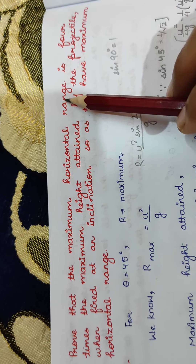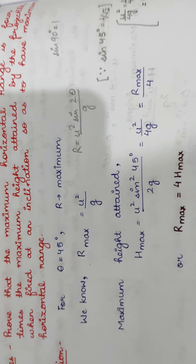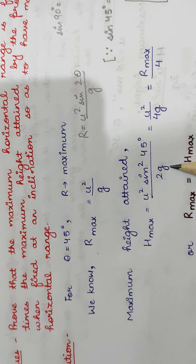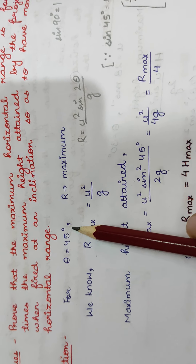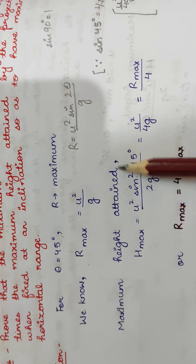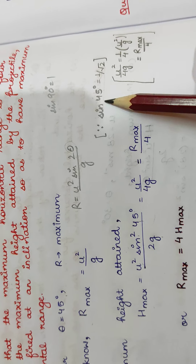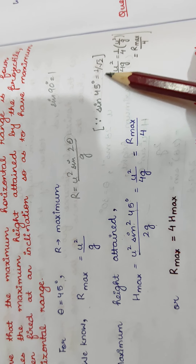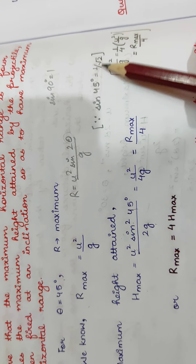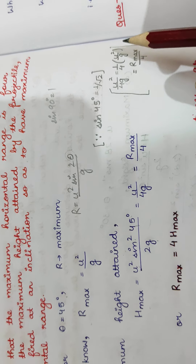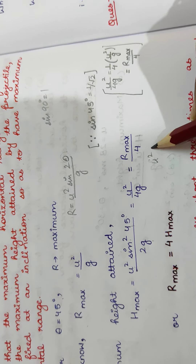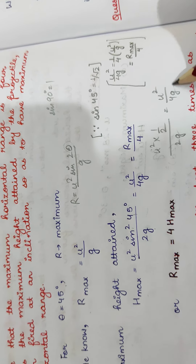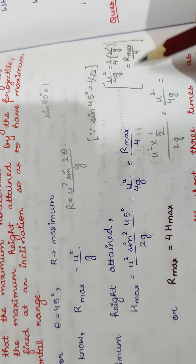Now we have to prove that this maximum horizontal range is 4 times the maximum height. The maximum height is H = u² sin²θ / 2g, and θ = 45°. We know that sin45° = 1/√2, so sin²45° = 1/2. Substituting this value, we get H = u² × (1/2) / 2g, which gives us H = u² / 4g.